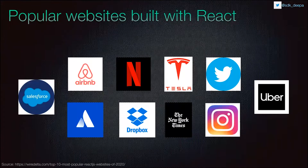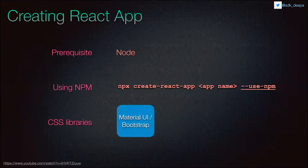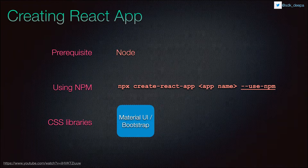Popular websites that use React include Airbnb, Tesla, Atlassian, and more. To get started developing React apps, you can use standalone IDEs — I personally use Visual Studio Code. For this talk I'll be using a browser IDE called Code Sandbox. Inside VS Code you need Node.js, and when you install using npm and create a React app it uses yarn by default. If you want to use node modules, you need to pass a flag. I've also added a YouTube video showing the exact setup steps.